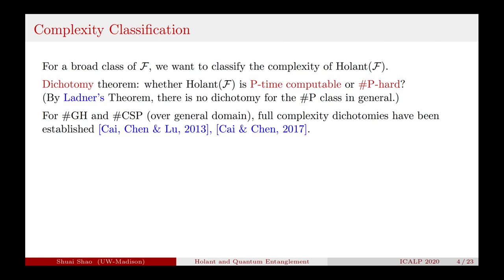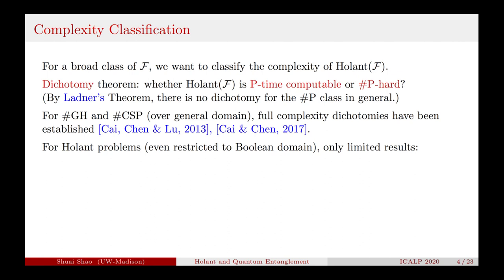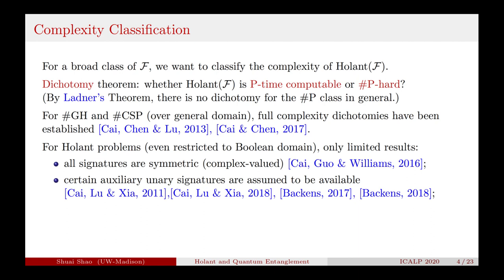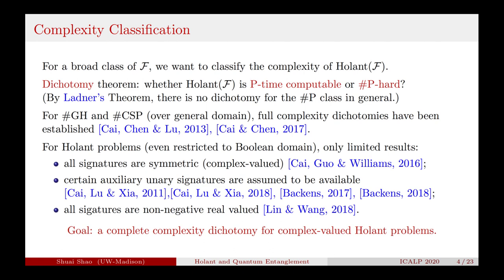These dichotomies are for problems defined over general domains. However, for Holant problems even restricted to the boolean domain, there are only limited results. First, if all signatures are symmetric complex-valued, then there is a dichotomy. We say a signature is symmetric if its function value only depends on the Hamming weight of its input. If certain auxiliary unary signatures are assumed to be available, then there are dichotomy results. And with all signatures being non-negative real-valued, a dichotomy has been proved. The goal is definitely to prove a complexity dichotomy for all complex-valued Holant problems.